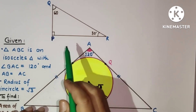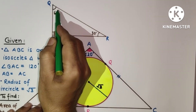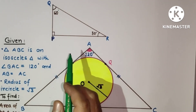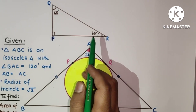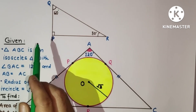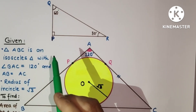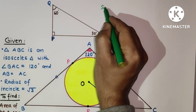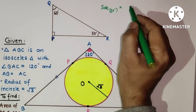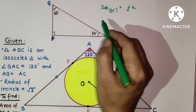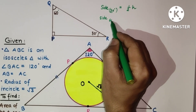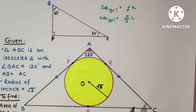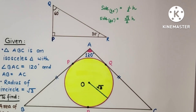This triangle is a right angle triangle — this angle is 30 degrees, this angle is 60 degrees, and this is 90. So we can use the 30-60-90 theorem. In this triangle, the side opposite to 30 degrees will be equal to half of the hypotenuse, and the side opposite to 60 degrees will be root 3 by 2 times the hypotenuse. This is the theorem.